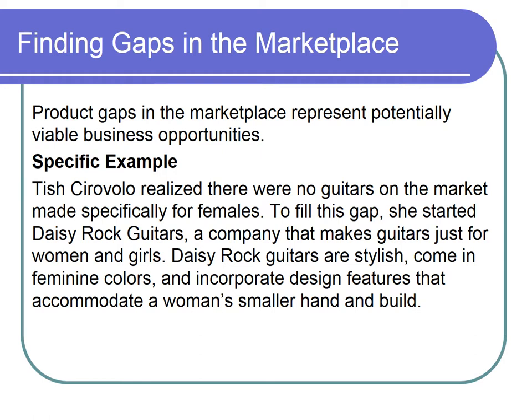Chish Cavolo realized that she liked the musician, liked to play guitar in particular. She realized that all guitars were kind of built for men — the length of arms and the like. So she started Daisy Rock Guitars, a company that makes guitars for women and girls. There was a need that wasn't being served appropriately, so she created a business around it.